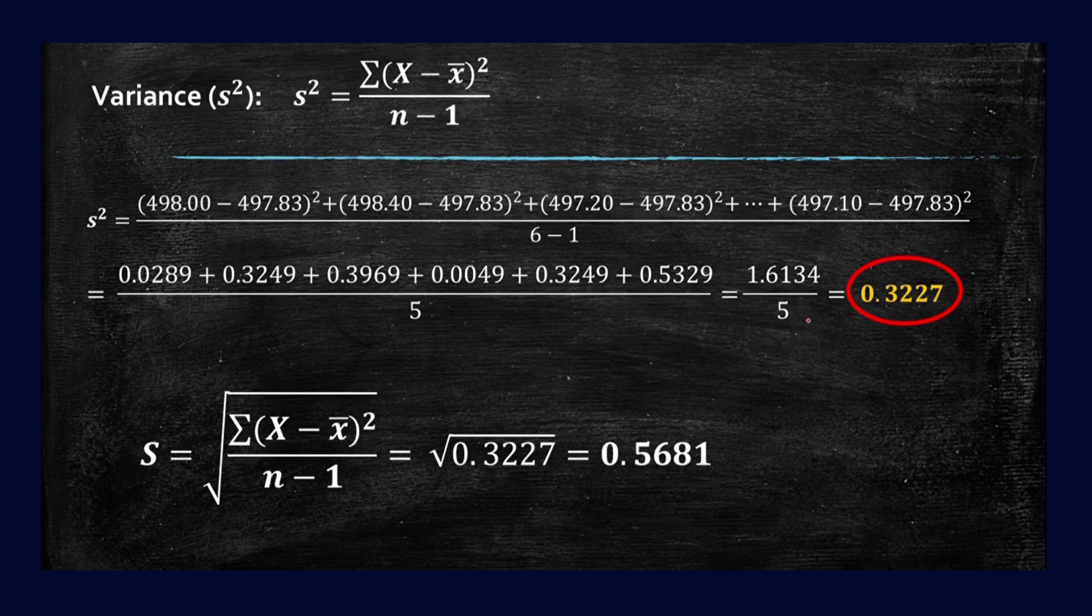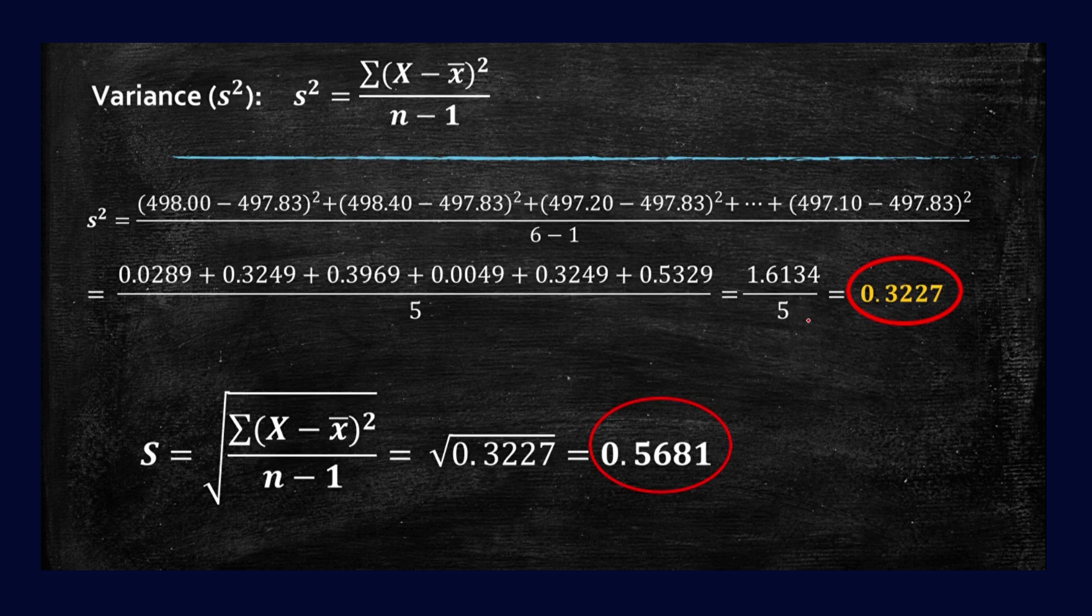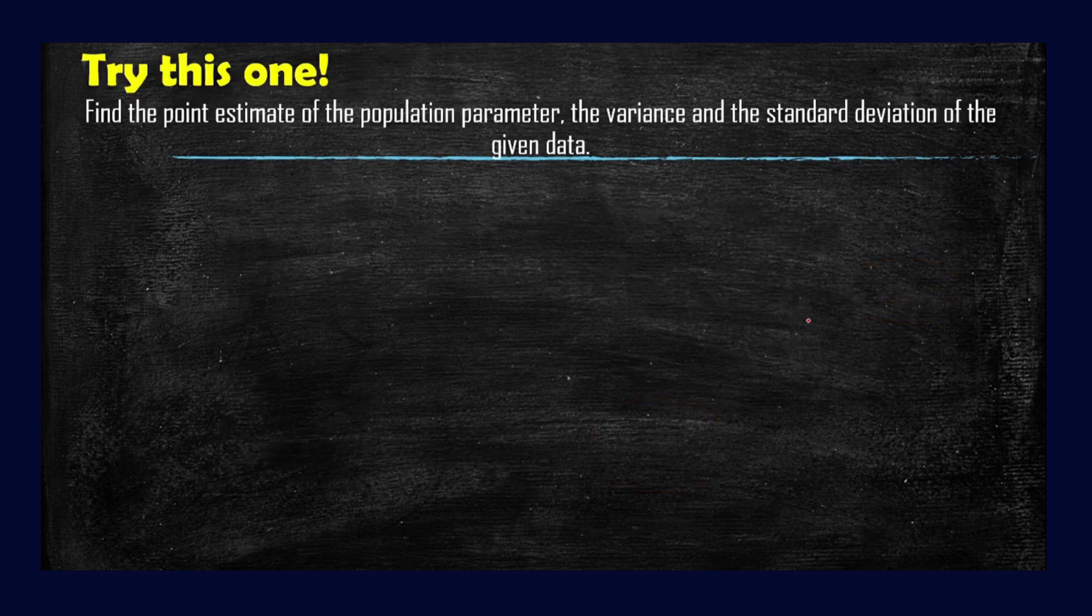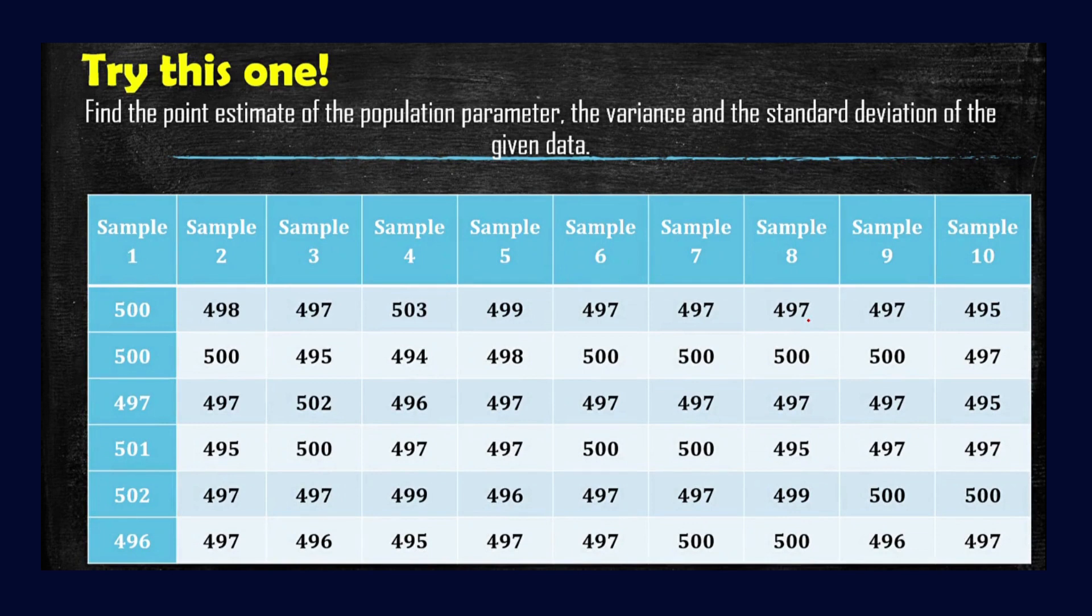So that is how easy it is to get the variance and the standard deviation. So if you have any question, you can post your question in our comment section or you can directly approach me via Facebook. So you can try this one. Find the point estimate of the population parameter, the variance, and the standard deviation of the given data. So good luck and enjoy this activity. Thank you for listening and I hope you have learned something from this video.